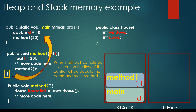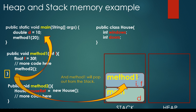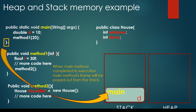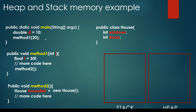After method one finishes its execution, method one's stack frame is removed from the stack memory and the flow of control goes back to the main method. Because there are no more operations in the main method, the main method's stack frame is also removed from the stack. So this is how stack memory and heap memory work: method calls, arguments and local variables are stored on the stack, while objects are stored on the heap. Whenever we create a new object, the reference is on the stack memory and the object itself is on the heap memory.